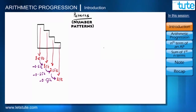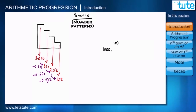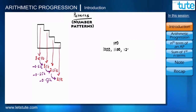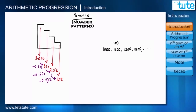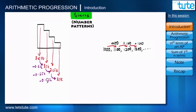Here is one more example: a man deposited 1000 rupees in a bank and it gives 100 rupees as interest at the end of the year. So at the end of the first year the accumulated amount will be 1100, at the end of the second year it will be 1200, then 1300, and so on. Every time 100 rupees is added to the previous amount. In this session we are going to discuss patterns where the succeeding number is formed by adding a constant number to the previous number.